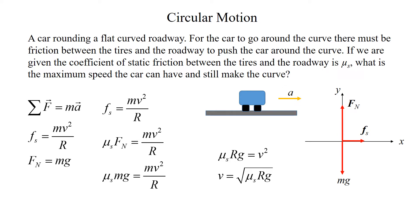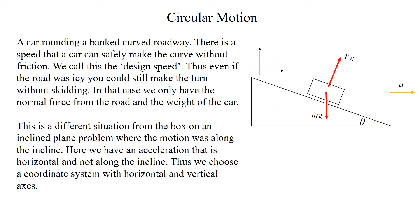Notice that the faster we go, the larger the radius of the curve must be to make it without skidding. Now let's look at a car rounding a banked curved roadway. There is a speed at which a car can safely make the curve without any friction — we call this the design speed.